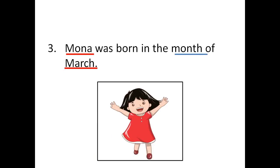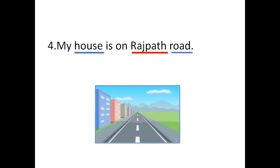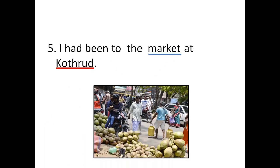'Mona was born in the month of March.' We have two proper nouns: Mona and March. The common noun is month. 'My house is on Rajpath Road.' The common nouns are house and road; Rajpath is a proper noun. 'I had been to the market at Court Road.' Market is a general name of a place, whereas Court Road is a special name of a place, so market is a common noun and Court Road is a proper noun.